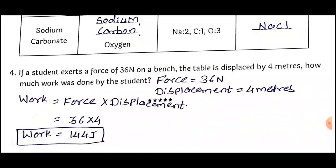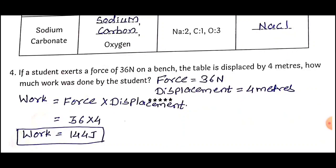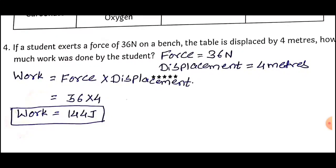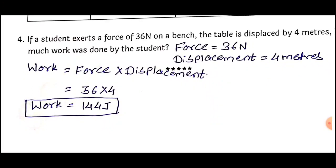Question Number 4: If a student exerts a force of 36 Newtons on a bench and the table is displaced by 4 meters, how much work was done by the student? Given: Force = 36 N, Displacement = 4 m. Formula: Work = Force × Displacement. Putting numbers into the formula: 36 × 4 = 144. So the work done is equal to 144 J. Work done by the student is 144 J.